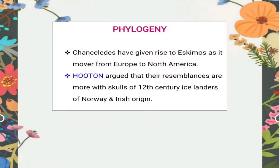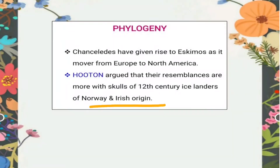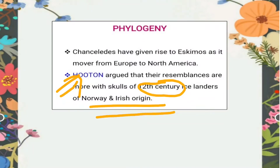Houghton, a physical anthropologist, argued that the Chancelade man does not so much resemble the Eskimos but rather the 12th century Icelanders of the Norway and Irish region. So Houghton says Chancelade man resembles more to them and less to the present-day Eskimos. In the next lecture we'll cover Grimaldi man — till then take care and please subscribe to the channel.